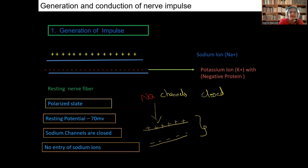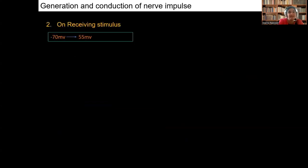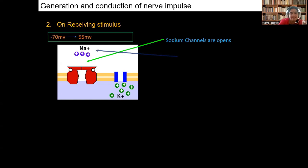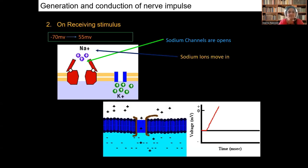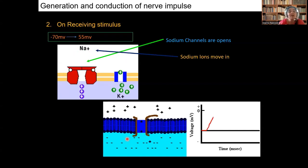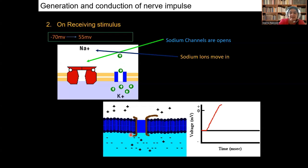Now when the impulse is generated because of the stimulus, the sodium channels open. When the sodium channels are opening, the sodium ions from outside are entering inside the axolemma. When the impulse is generated, sodium channels are open, allowing the sodium ions to pass through the sodium channel inside the axon. Positive ions are entering inside. This causes depolarization. Because of the entry of the sodium ions due to the excitation of the nerve fiber, there occurs what is called depolarization.